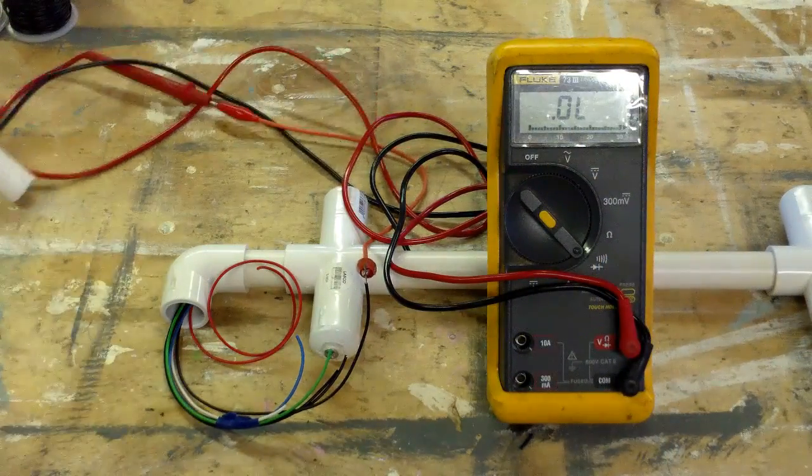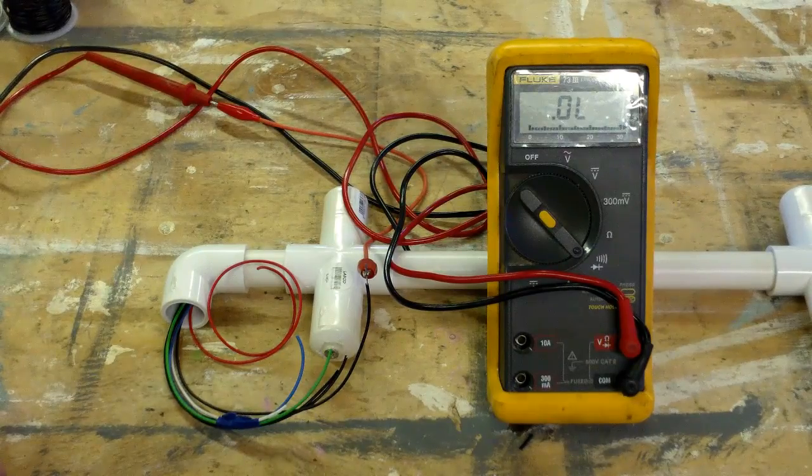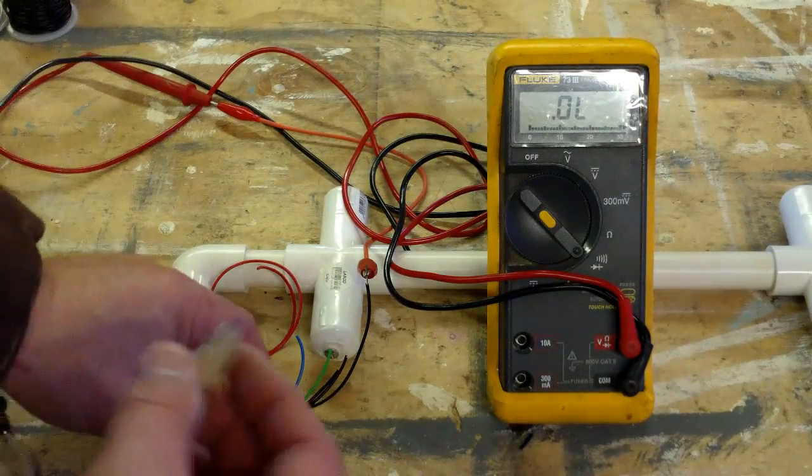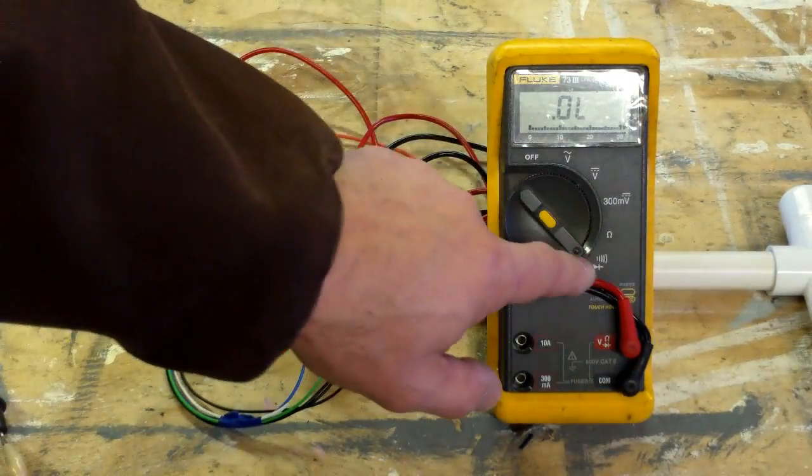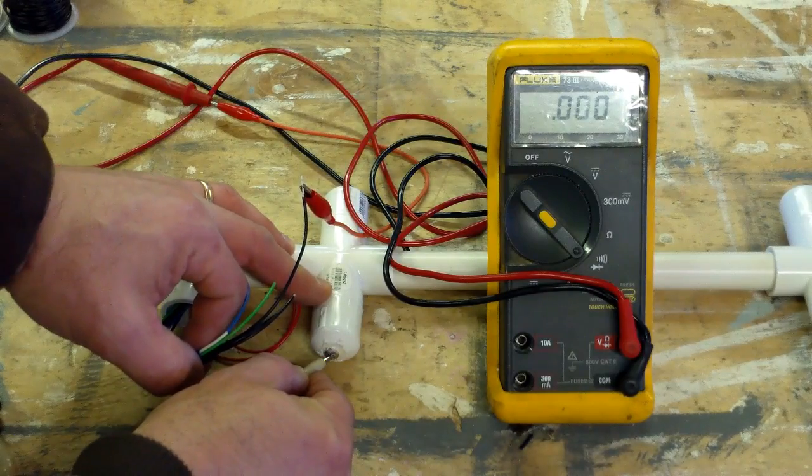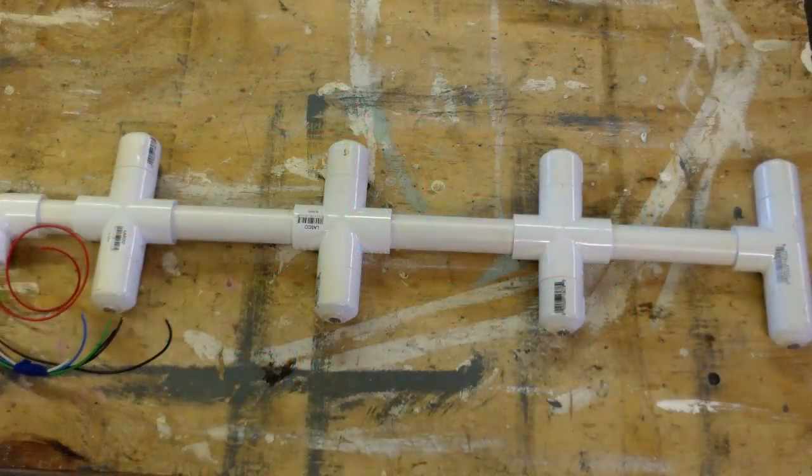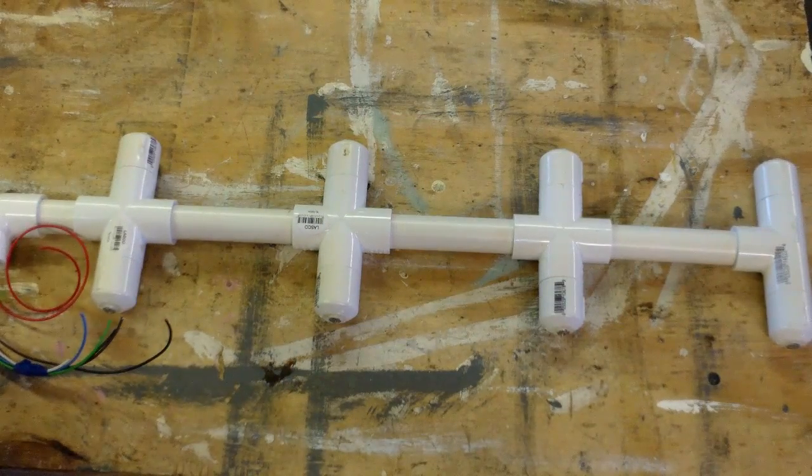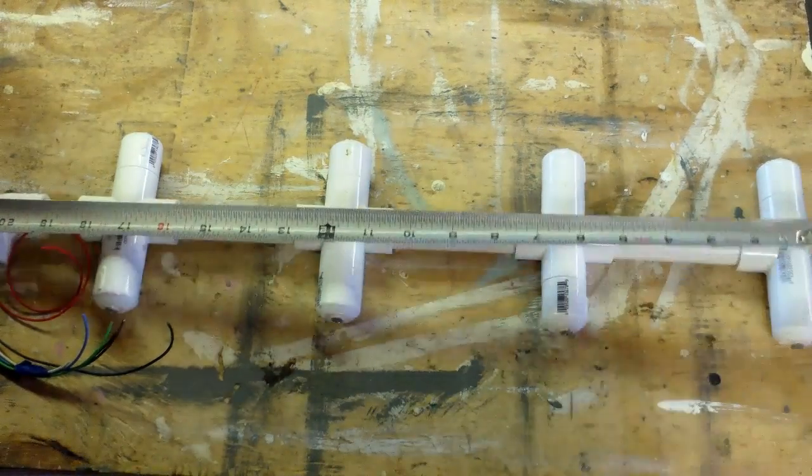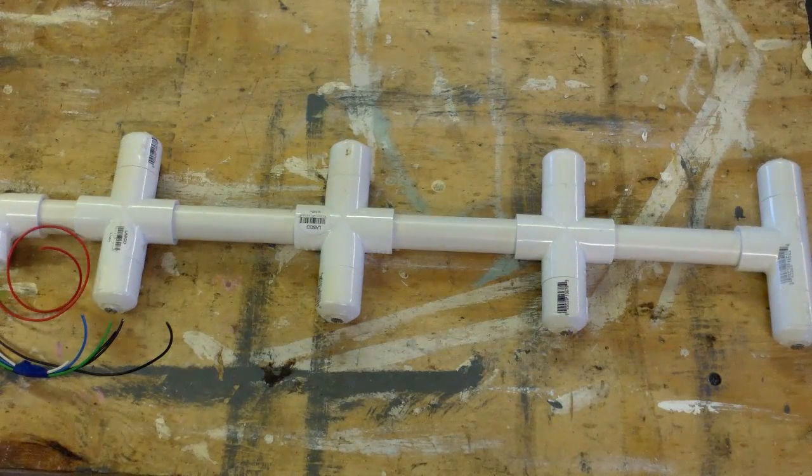Once you get everything dry fit and assembled, one of the things you're going to want to be sure and do is to check the continuity of each of these leads. Because once you get it glued together there's no going back and fixing it. You'll just have to start over. So what I do is I just take a multimeter, set it on the continuity testing and then just go down with some alligator clips and just make sure each one of the wires is making a good contact to the screw. Okay, so now I've got everything kind of dry fit here together. It's all assembled. I needed it to be 21 inches total length. I'm looking good on that. Check continuity. So now I'm ready just to start gluing everything together.